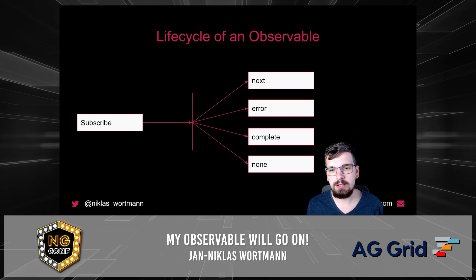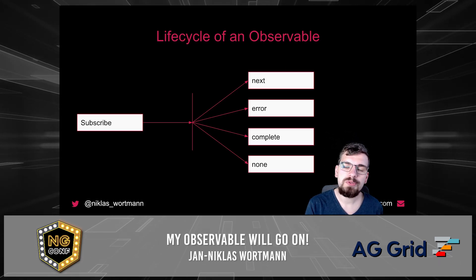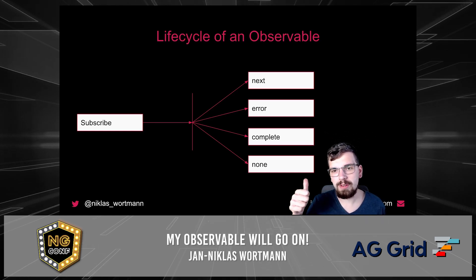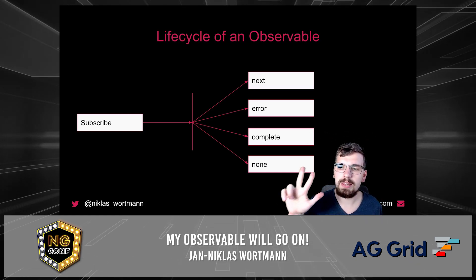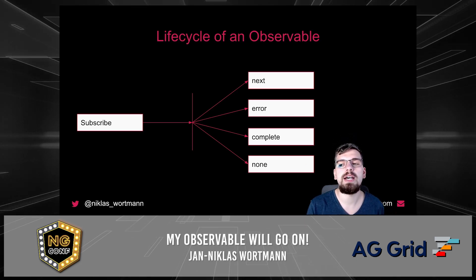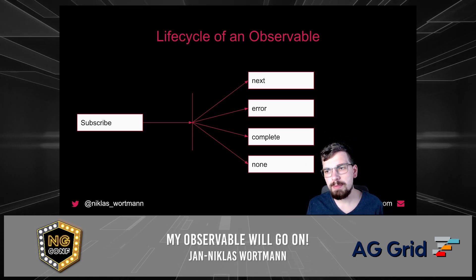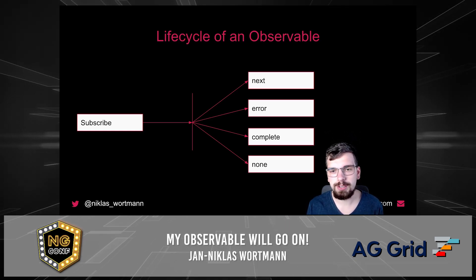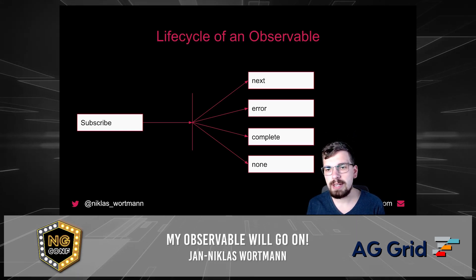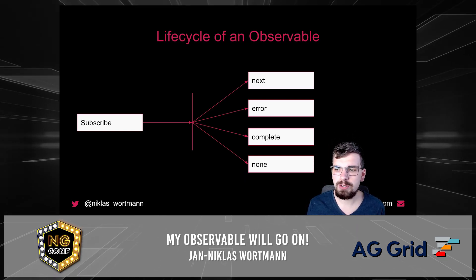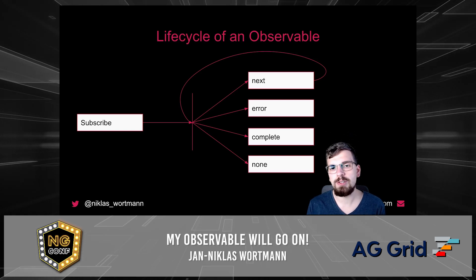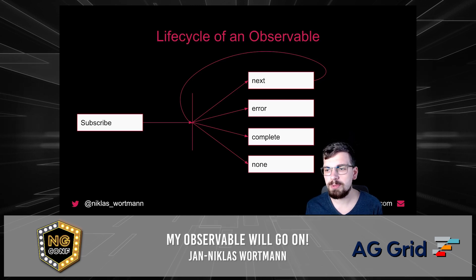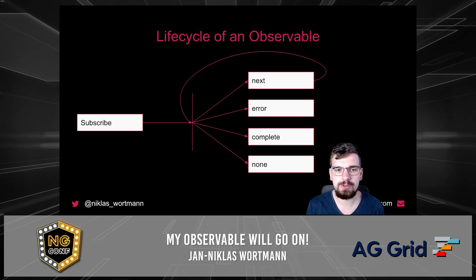Let's talk about the life cycle of an observable. As soon as we subscribe to an observable, we can register three callback functions: one for the next channel, the error channel, and the complete channel. Technically an observable doesn't even have to emit one of those, so there might be occasions where neither next, error, nor complete happen. In case of the next emission, we have to consider that there can be multiple emissions afterwards — an observable can potentially emit multiple values and complete or error at a certain point.